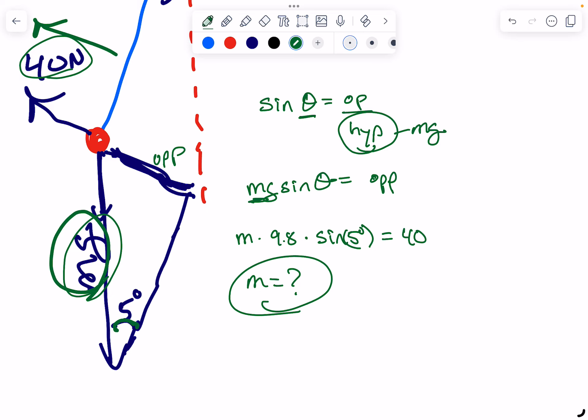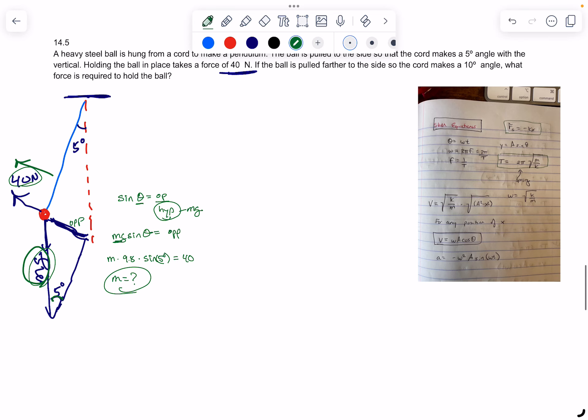So once you solve for the mass, we use that in the second arrangement. We then draw another pendulum, right? Boom, pendulum. But in this case, we're going to hold it with a 10-degree angle. So again, I'll draw my straight arrow down, and then I'm going to have a line. Now we've got a bigger angle that's 10 degrees. I've got a ball right here.